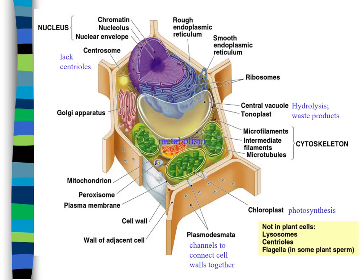Plant cells have a large central vacuole — that big clear structure in the middle — whose main role is water balance. If you don't water your plants they wilt, because the large central vacuole loses water, causing the cell walls to collapse. When it's full it pushes against the cell walls, keeping the plant rigid. Plasmodesmata are channels in the cell wall connecting adjacent plant cells, allowing water and chemical messages to pass through.